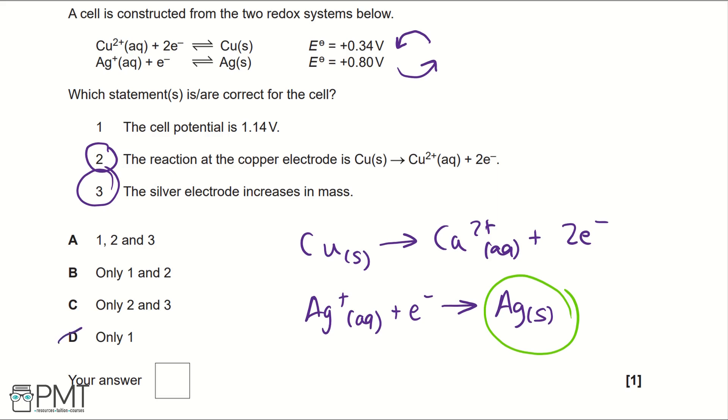For the cell potential, the cell potential would be 0.8 minus 0.34 to give us 0.46 volts. That does not match the cell potential, so it can't be one. Therefore, our answer for this question is C.